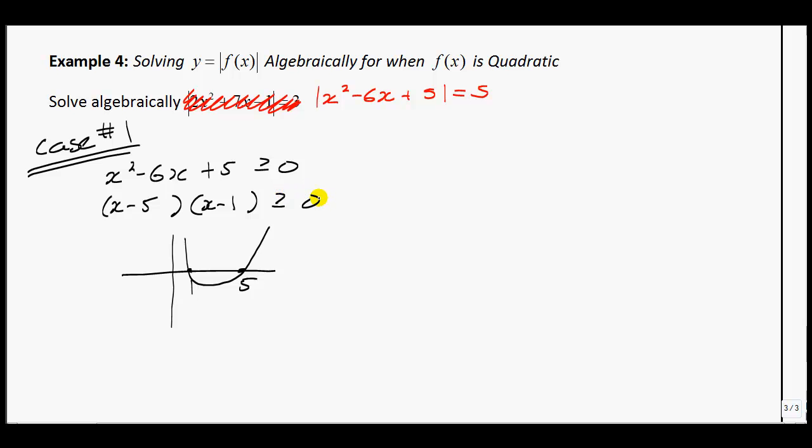When is this graph greater than or equal to 0? This graph is greater than or equal to 0 when x is greater than or equal to 5, so in this region, and when it's in this region, when x is less than or equal to 1.